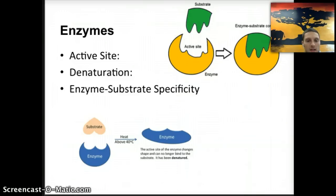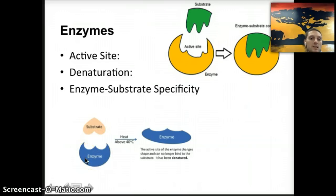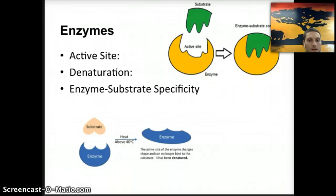If an enzyme is denatured, that means that the shape or structure of the enzyme is changed, and it blocks the enzyme from being able to carry out its function. We're going to look at some different ways that enzymes can be denatured in the next couple of slides.